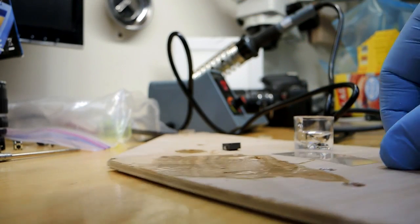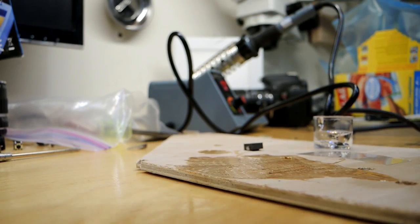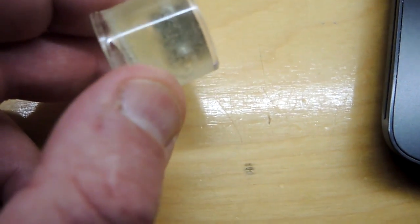When analyzing these components, if you want to do a cross section, it's very hard to hold such a small component while you're lapping it. That's where some sort of container and a tube of epoxy really comes in handy.